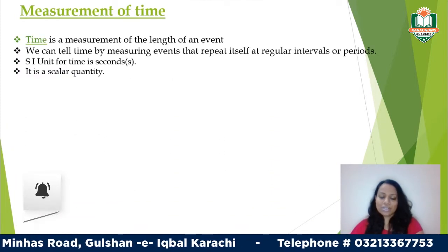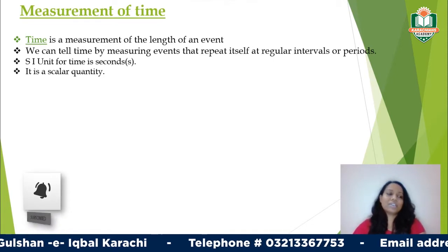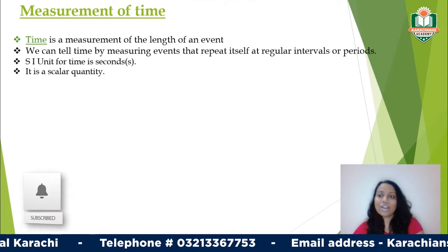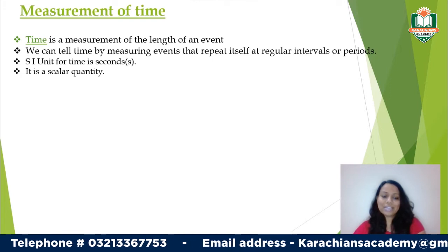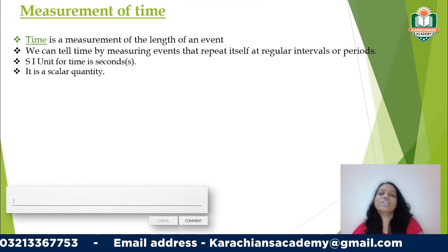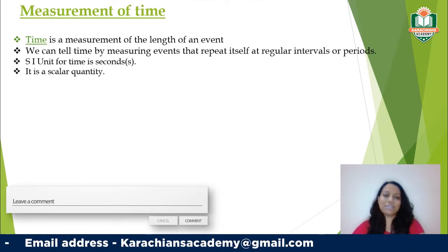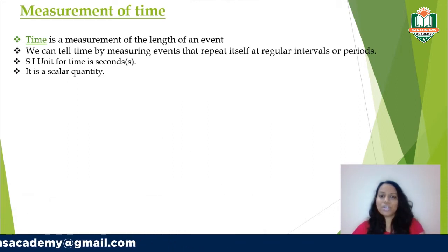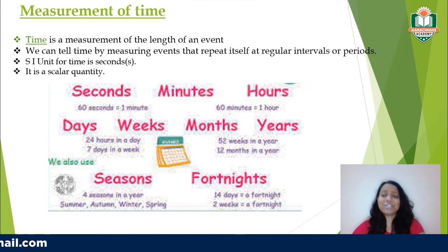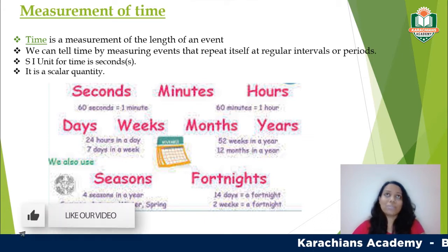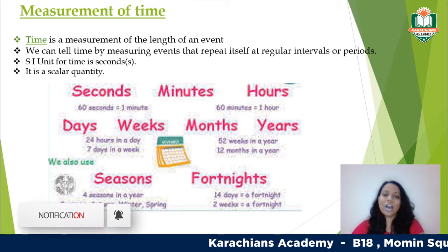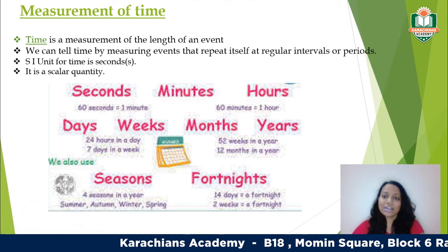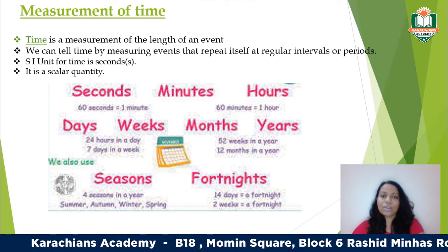When we say time, it's actually measuring an event — the length or the duration of an event. Time is actually measuring events that are repeating at regular intervals. For example, a year has 365 days, 52 weeks, or 12 months, and those repeat again and again.